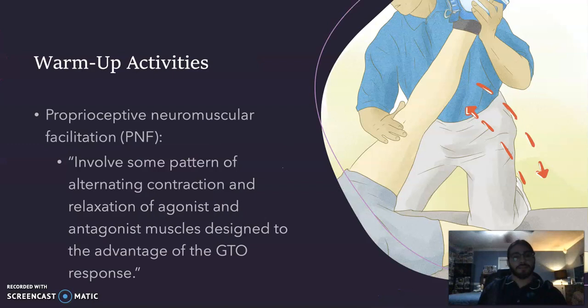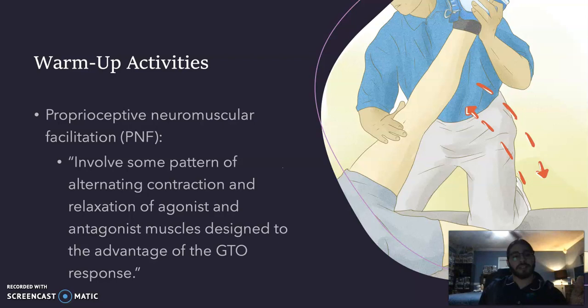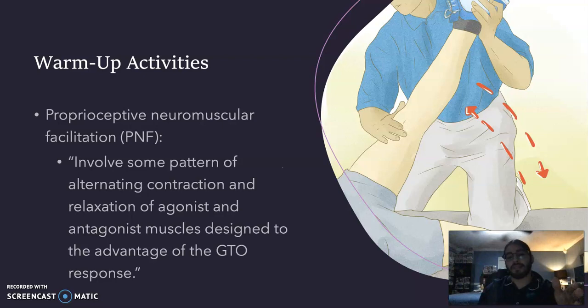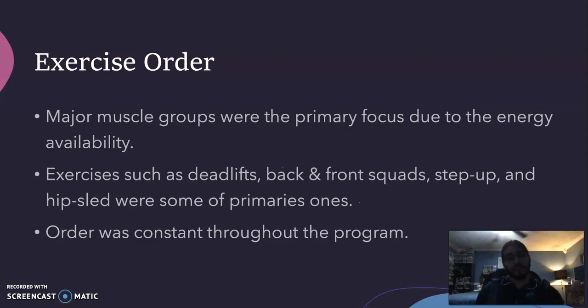For warm-up activities, I chose proprioceptive neuromuscular facilitation, or PNF, which involves a pattern of alternating contraction and relaxation of agonist and antagonist muscles designed to take advantage of the GTO response. These stretching activities made it much easier for the athlete, since self-induced pain can be quite intense. Offering assisted help allowed better management of how much discomfort to apply, preventing the athlete from going overboard.